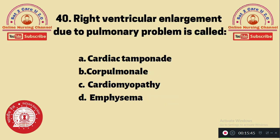Question 40: Right ventricular enlargement due to a pulmonary problem is called — A. Cardiac tamponade, B. Cor pulmonale, C. Cardiomyopathy, D. Emphysema. Right ventricular enlargement caused by a pulmonary problem is known as option B — cor pulmonale.